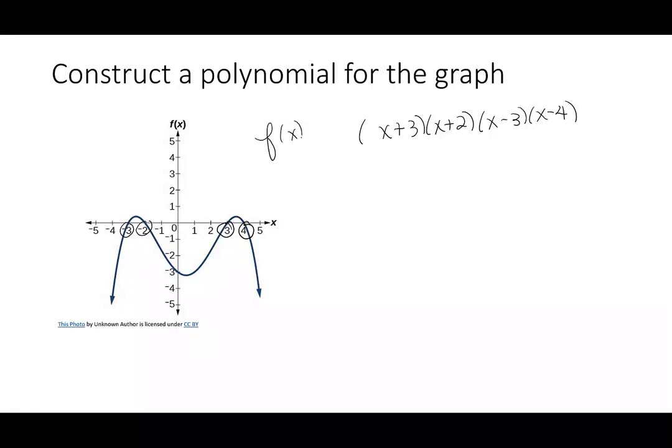That will be f(x), and I know I have some kind of leading coefficient, and like the other times, we use the intercept to find it. So we say f(0) is a times (0 plus 3) times (0 plus 2) times (0 minus 3) times (0 minus 4), and that's negative 3.